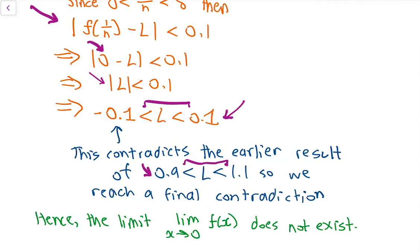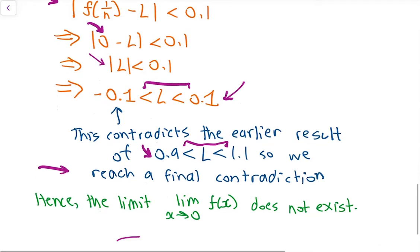Remember, this is because we proved the right-hand side limit does not exist. In order for the overall limit as x goes to 0 to exist, both the left-hand and right-hand limits must exist. Since we've shown that one of the limits doesn't exist, we know the overall limit is not going to exist either. That concludes the solution to this limit problem.